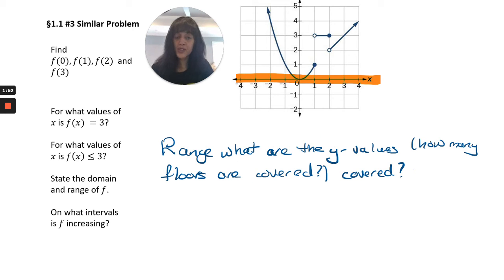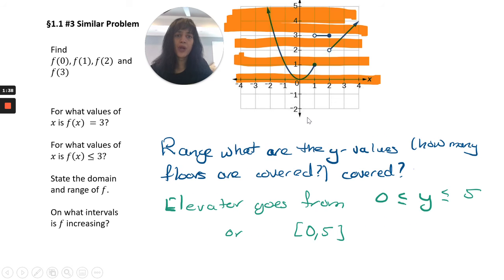Range is the answer to the question: what are the y values? How many floors are covered by my graph? To do that, I just look at the floors. Definitely the 0th floor is covered. Nothing below the 0th floor is covered. If I keep going and start drawing horizontal lines, all floors from 0 to 5 are covered. It might not be covered by this side of the graph, but this side covers up to floor 5.